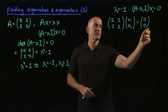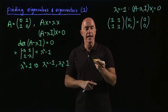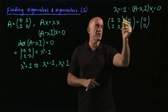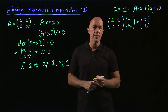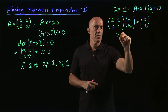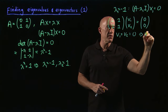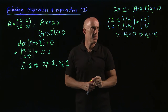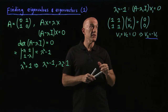This gives us two equations: v₁ plus v₂ equals 0, and v₁ plus v₂ equals 0 — the second equation is exactly the same as the first. That's always true for the 2×2 case because A minus λI is not an invertible matrix. So we get v₁ plus v₂ equals 0, which tells us that the second component equals the negative of the first component.